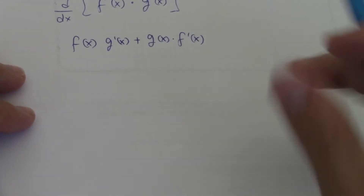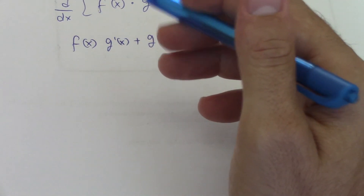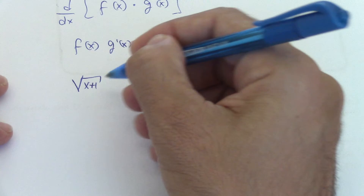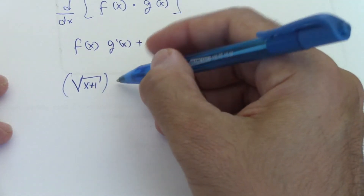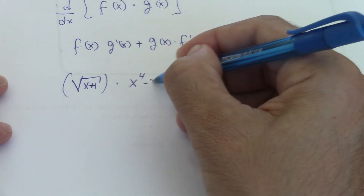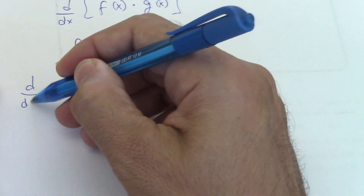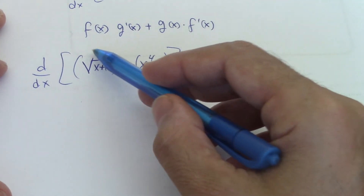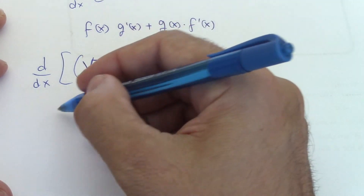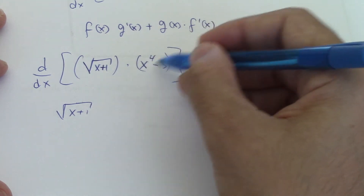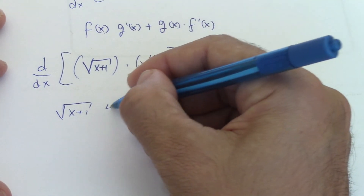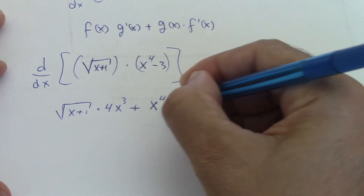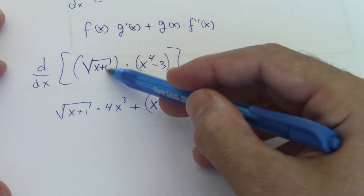Let's take a look at another example that will help you understand it better. Let's suppose we have two functions: the square root of (x + 1), times (x to the fourth minus 3). Those two functions, and we want to find d/dx. According to the product rule, let's suppose this one is f(x) and this one is g(x). So the first one — square root of (x + 1) — times the derivative of this one, which would be 4x to the third, plus the second one (x to the fourth minus 3) times the derivative of the first one.